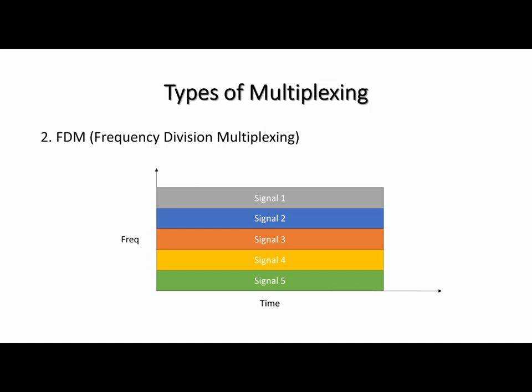The second type is frequency division multiplexing, also known as FDM. In FDM, each user's signal modulates at a different carrier frequency, and these different carrier frequencies are clustered together at the same time. If you have five different messages, they are modulated at five different carrier signal frequencies and can all be sent simultaneously through a single channel. The overall available bandwidth is divided between these five channels.